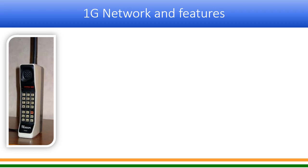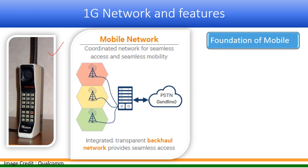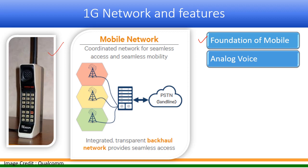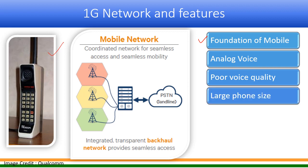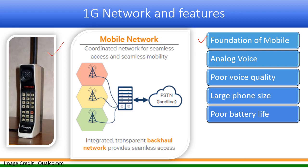Neighboring cells operate on different frequencies, and frequency reuse is possible after a few cells. The 1G wireless communications were actually mobile — although there were issues related to handoff when moving from one area to another and calls might get dropped, you could communicate anywhere with coverage. The phone used was slightly bigger in size — this is a Motorola phone used during the 1G era.